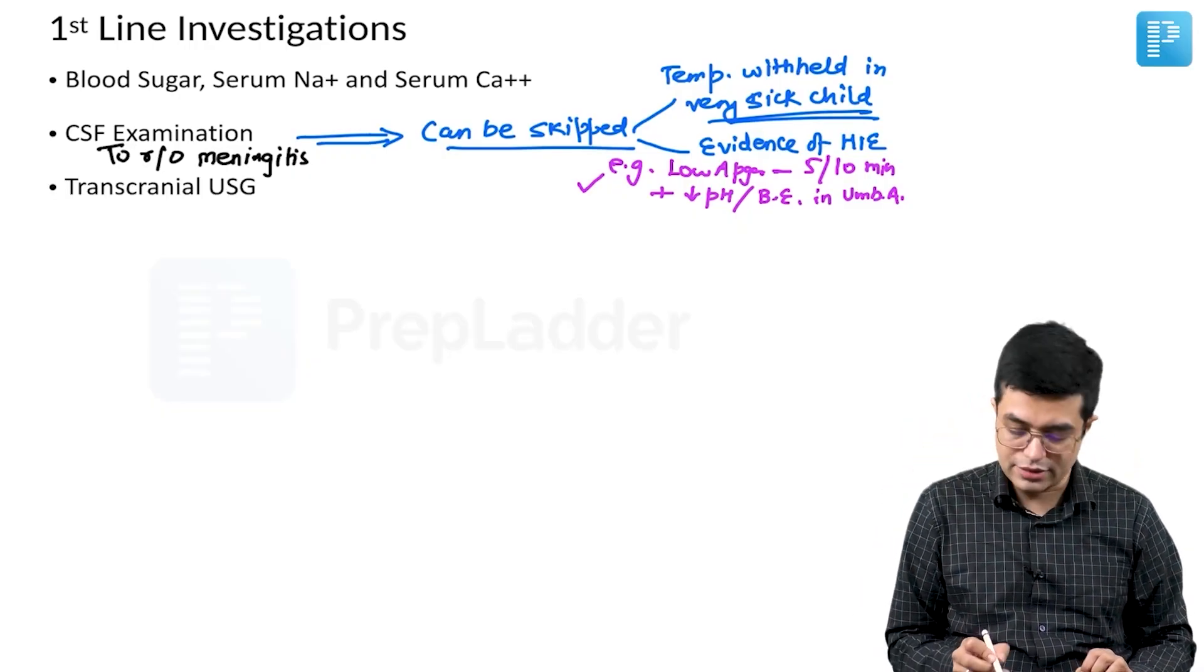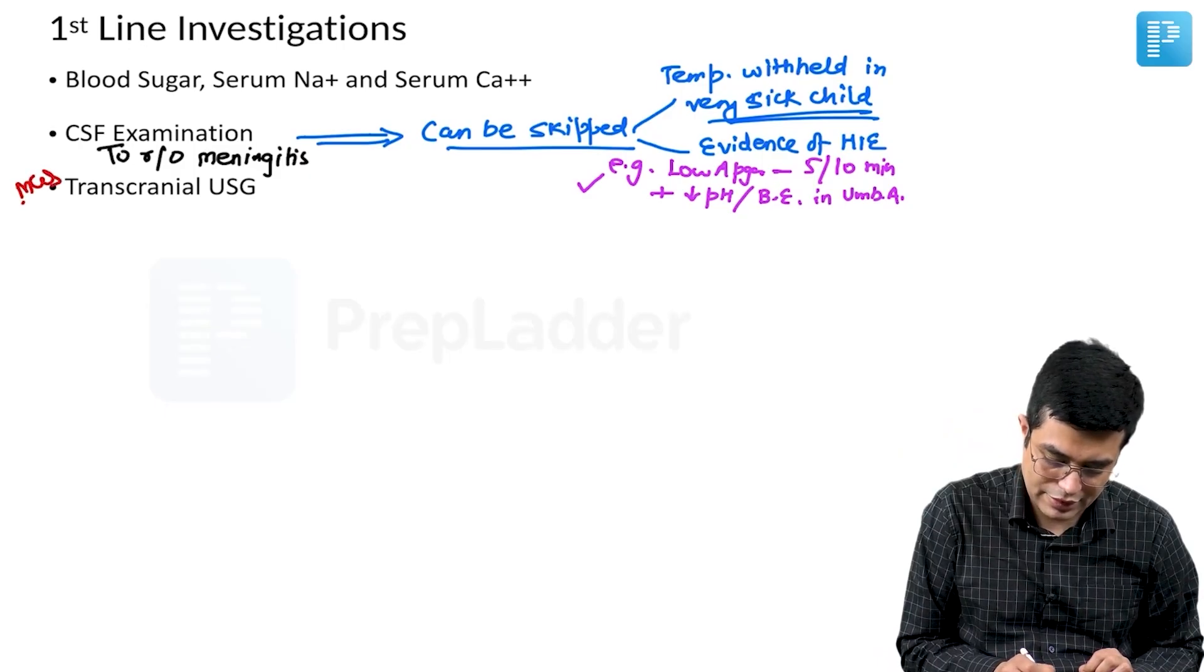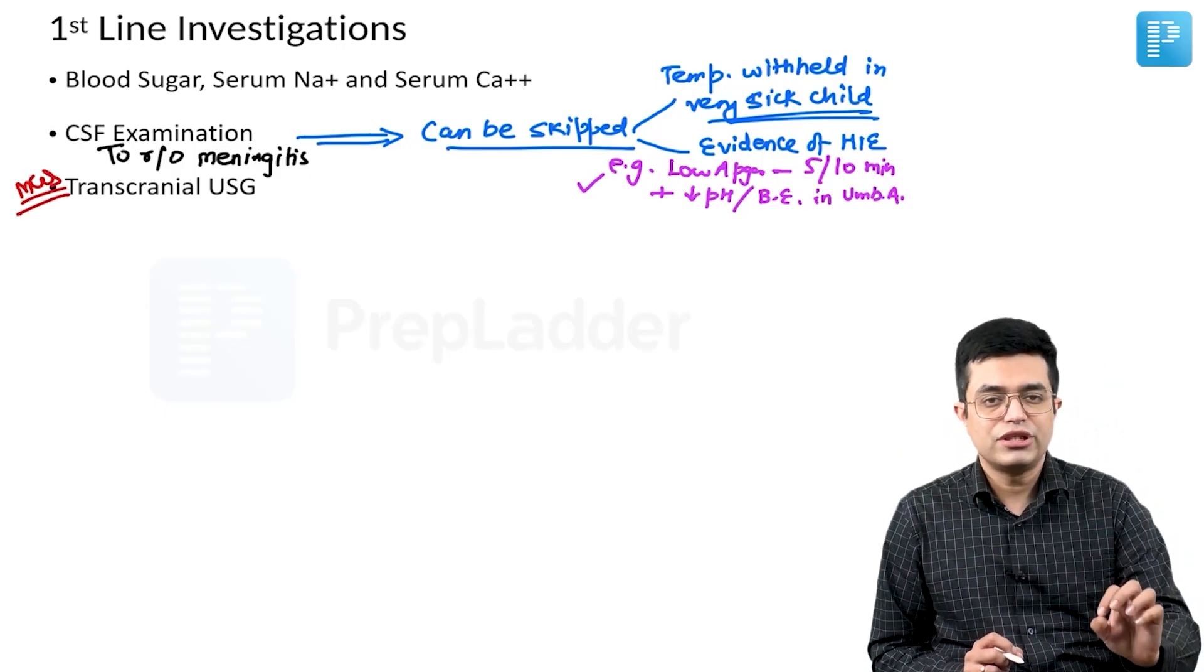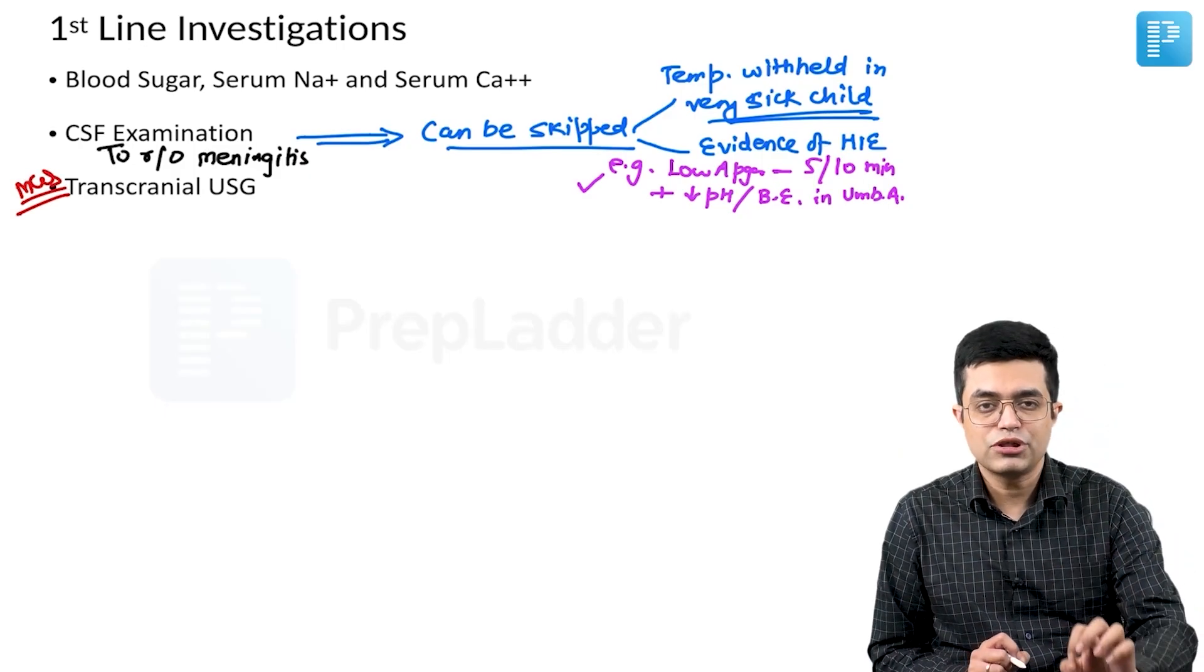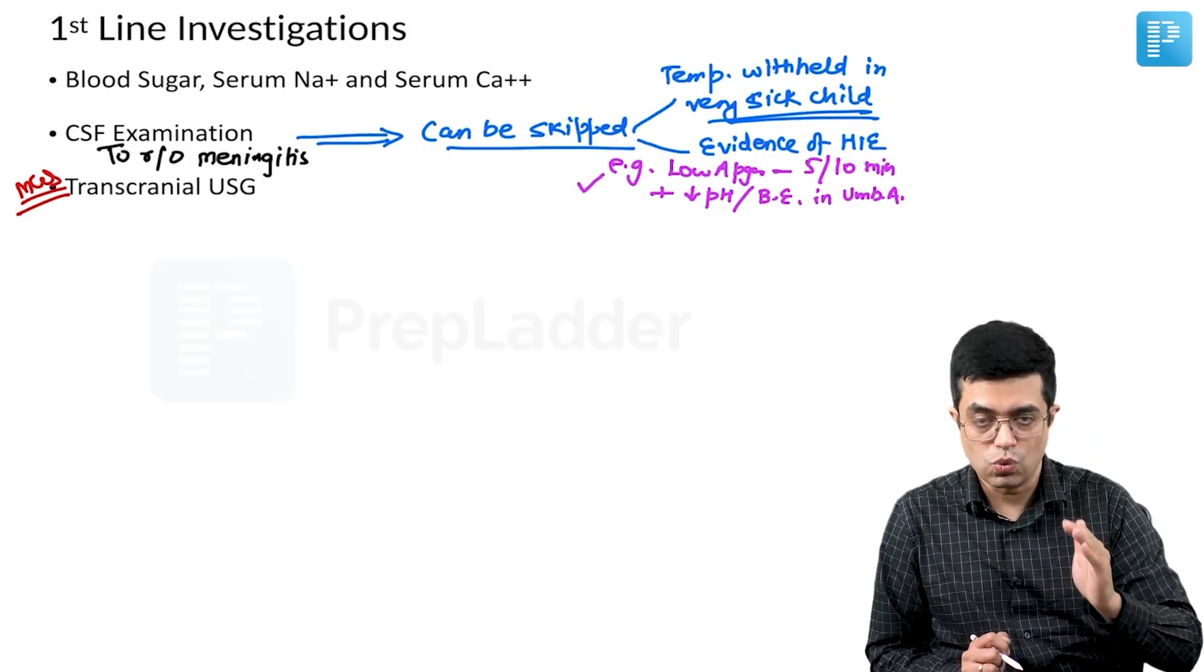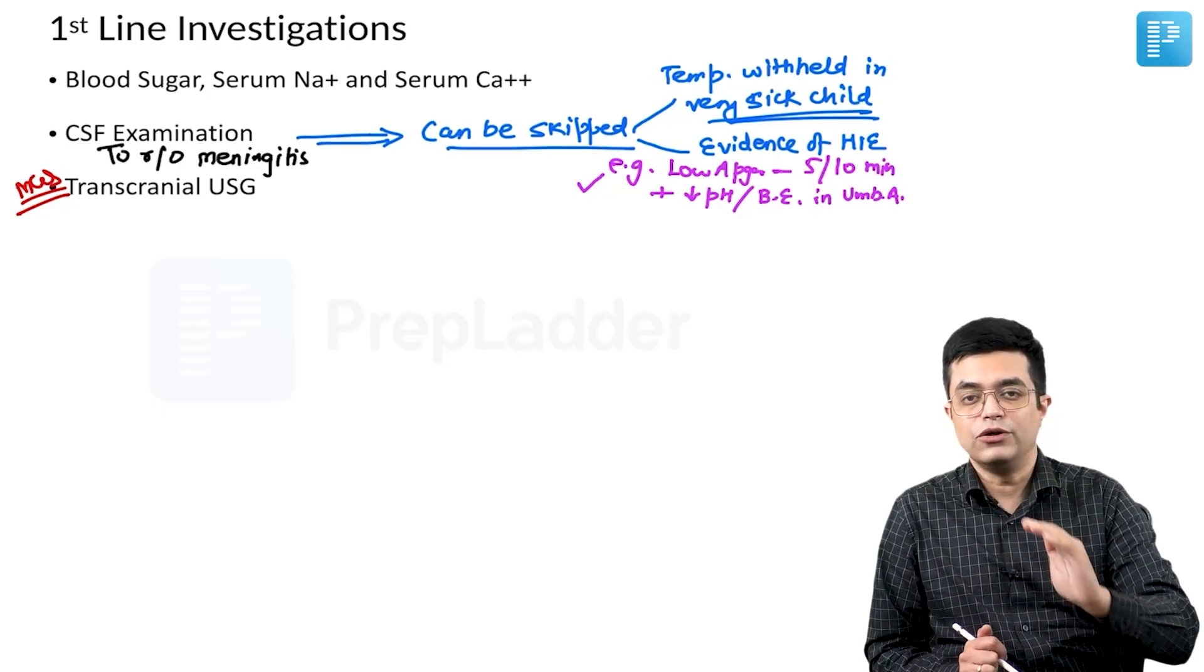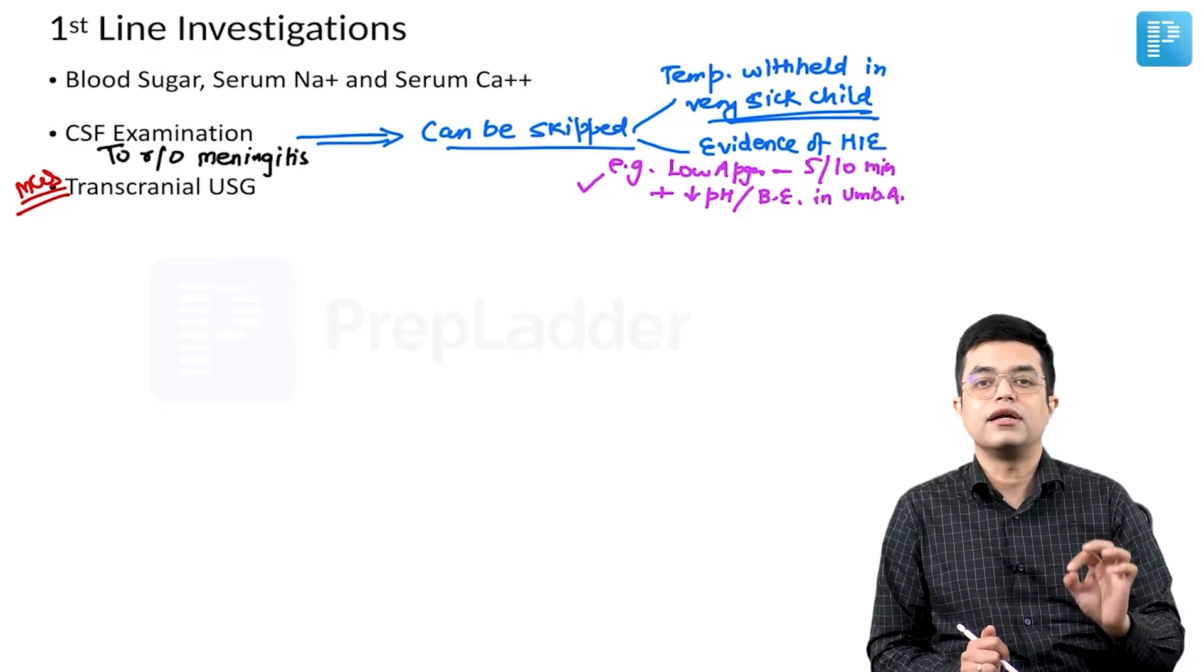Then you will do a transcranial ultrasound. MCQ on this has been asked in the entrance exam. Neonatal seizures happen in a preterm child admitted in an ICU on day 2 of life. What is the next imaging investigation you will do? The answer is transcranial ultrasound.